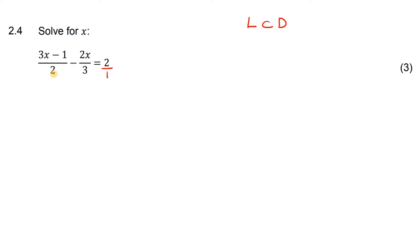The lowest common denominator between 2, 3, and 1 would be the number 6. So to make this one become a 6, we will multiply by 3.